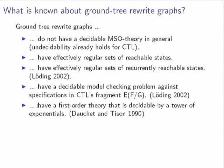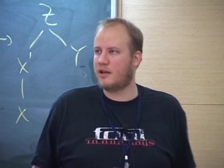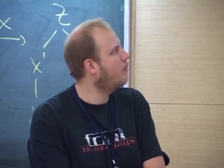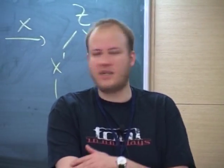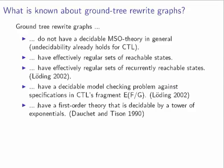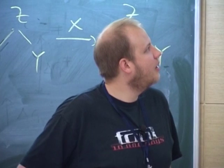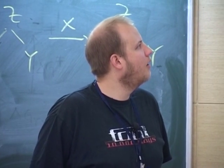It is well known that the first-order theory of ground tree rewrite graphs is decidable. This was shown by Dauchet and Tison via tree automata techniques, but the upper bound is decidable only by a tower of exponentials. Alternatively, decidability follows from the fact that ground tree rewrite graphs are tree automatic, and it follows from a general result that their first-order theory is decidable.